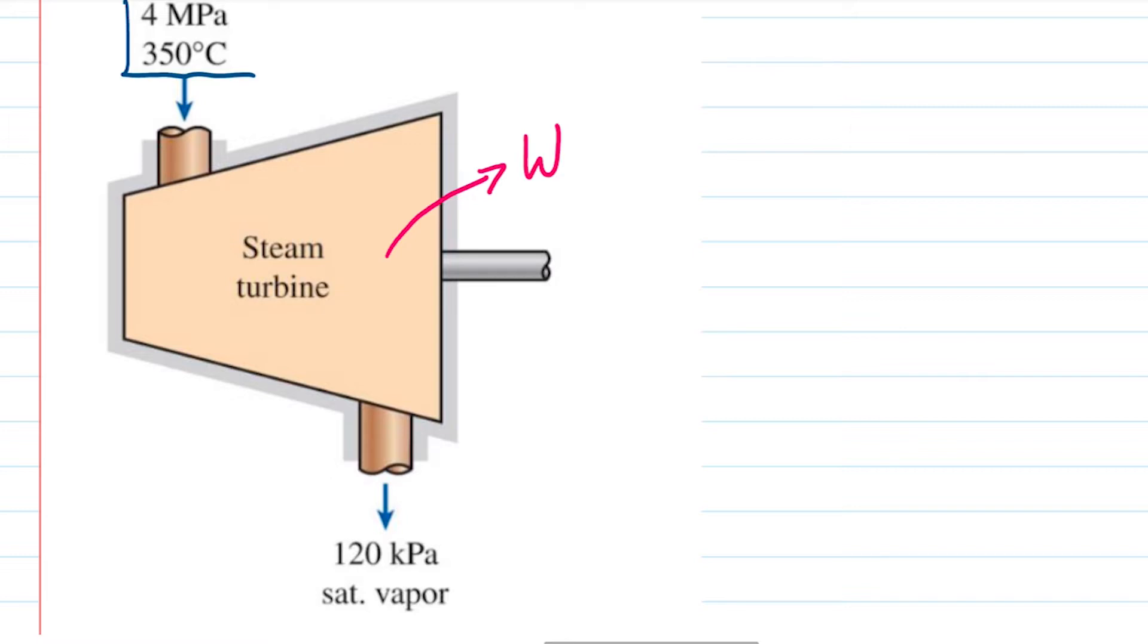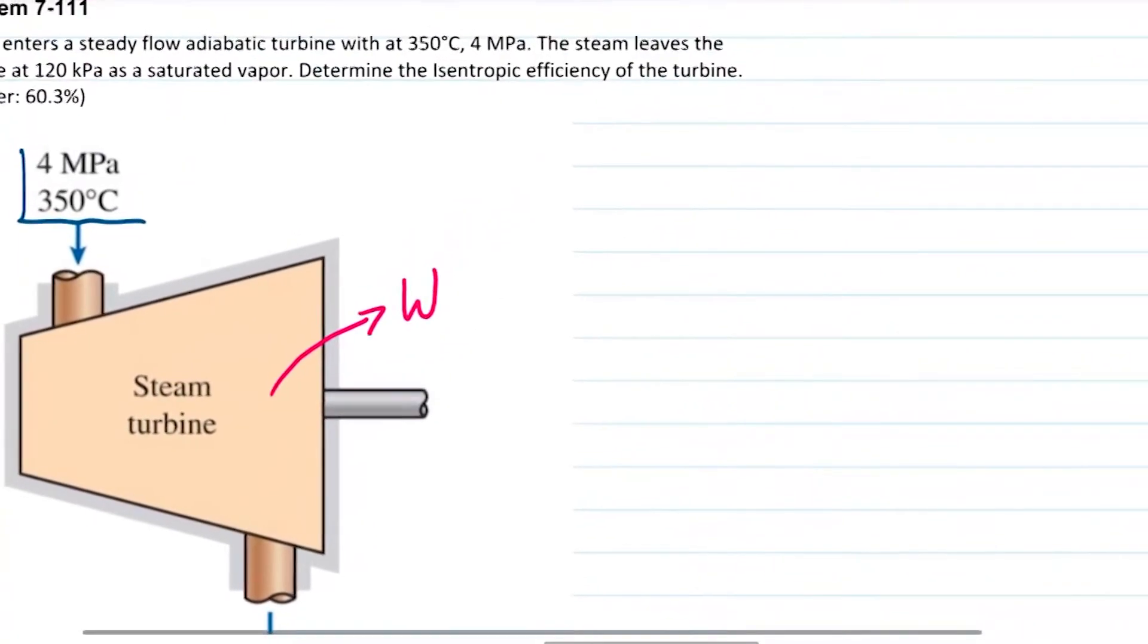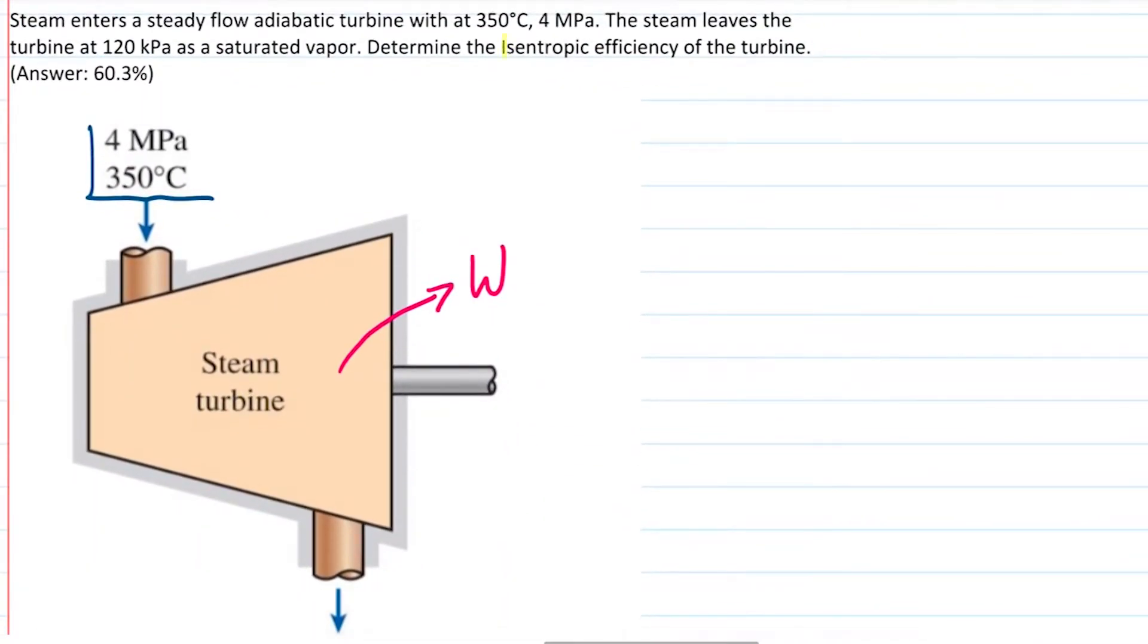So what we're seeing here, this inlet and outlet, this is a real case. We can measure the thermodynamic properties of the steam as it's entering and as it's leaving, and we can calculate the work based on that. But we know that this is not the whole story, because in reality we could get more out of it.